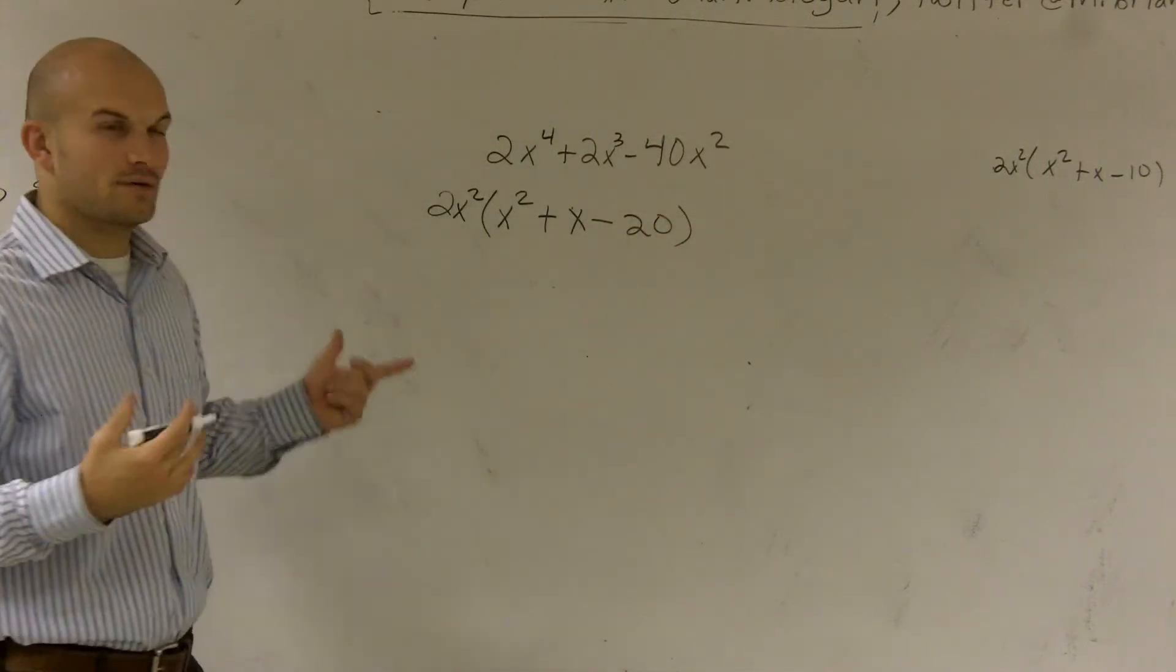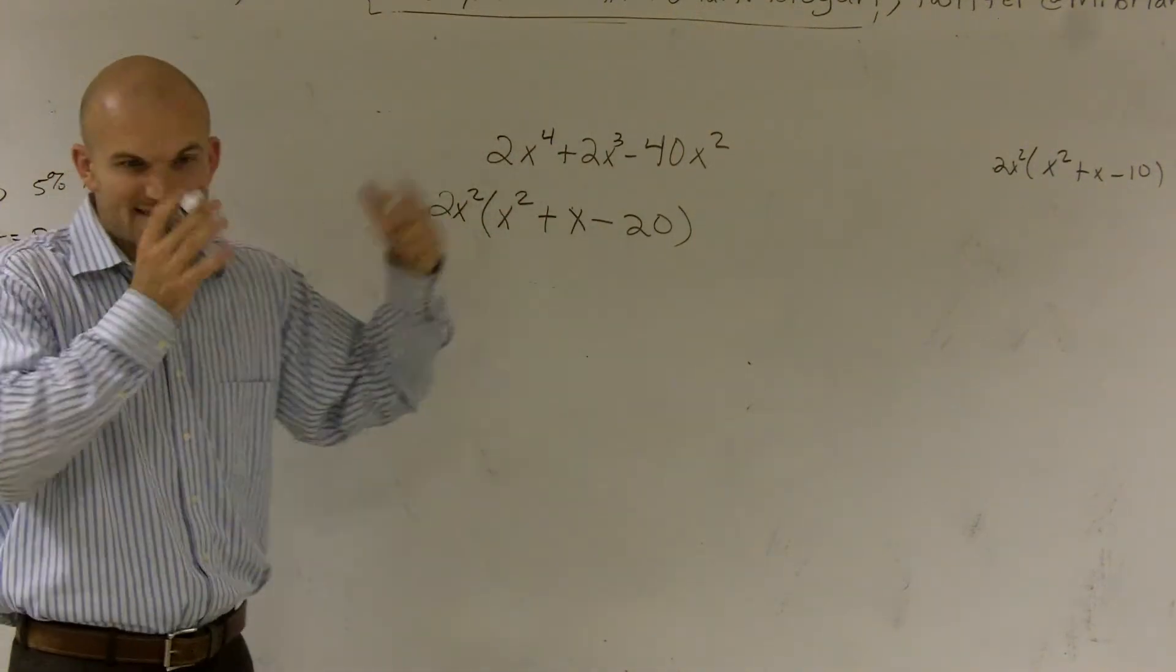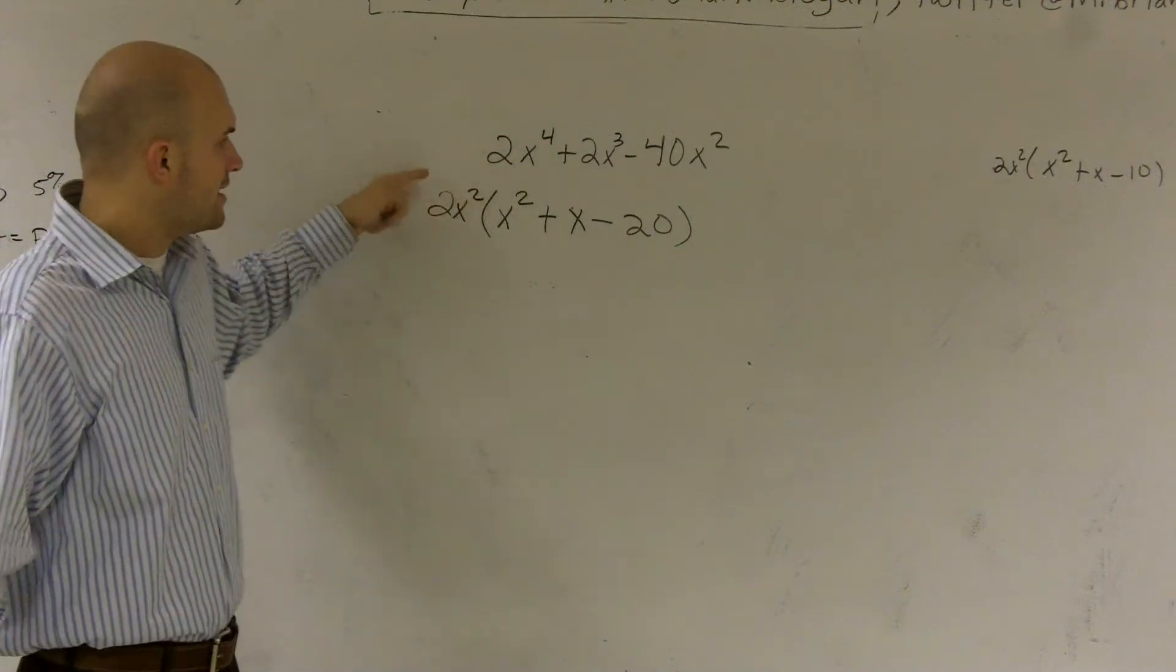Because remember, if you wanted to double check your work, when you're pulling out an x squared, it's kind of like dividing out a 2x squared. And if you want to check your work, just do this distributive property again.